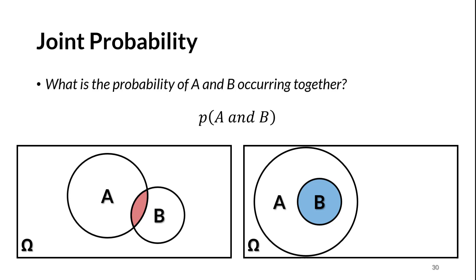Remember that any time you add variables to a joint probability statement, the joint probability can be at largest the probability of the least probable event. If B happens, A is certain to happen. We can rephrase this as: given that B has occurred, A is certain to occur — because there is no part of B outside of A. If B occurs, A has to as well. The statement 'given that B has occurred' is a statement of conditional probability. Conditional and joint probability are tightly linked.